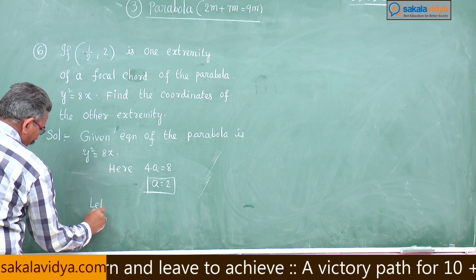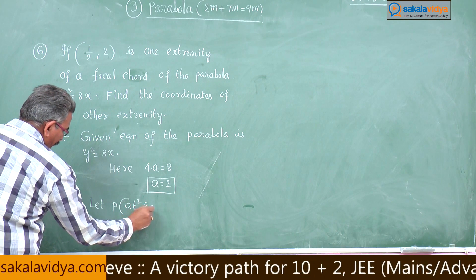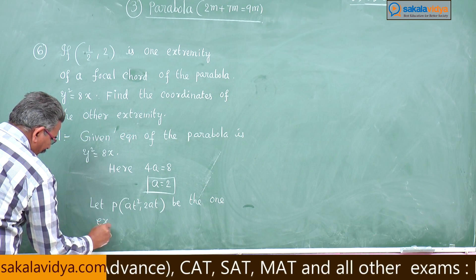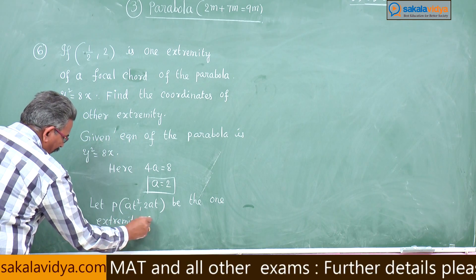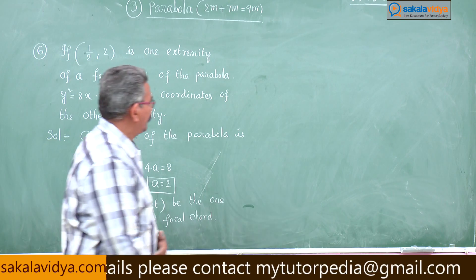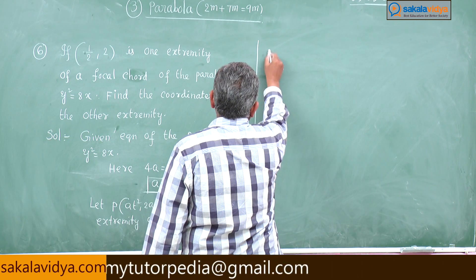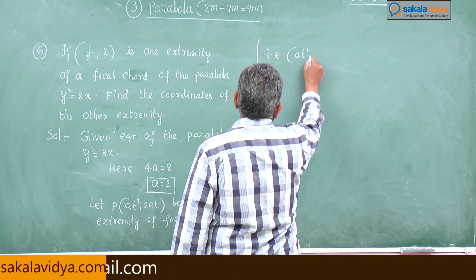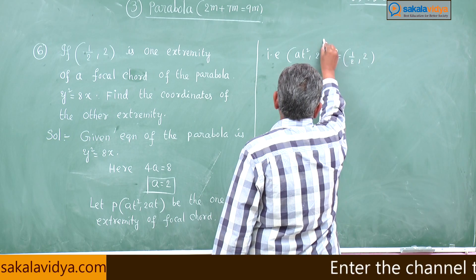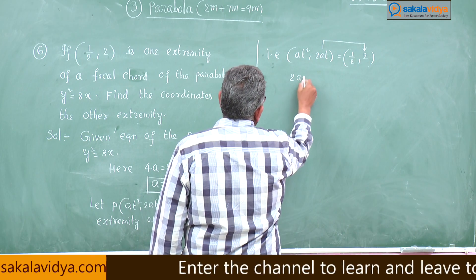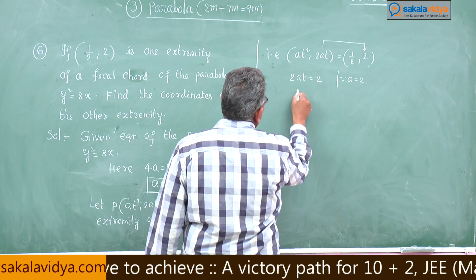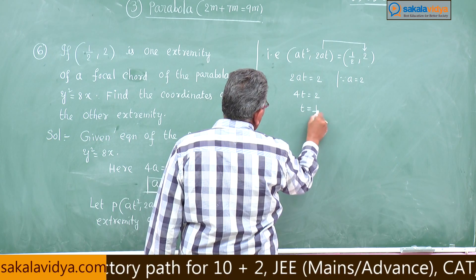Let P(at², 2at) be one extremity of the focal chord. That means (at², 2at) = (1/2, 2). From 2at = 2 and a = 2, substituting gives 4t = 2, so t = 1/2.